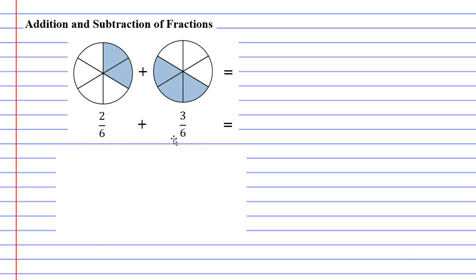We're adding these fractions together and we can see them above in the diagram. The first diagram has a circle cut into six pieces, two of which have been coloured in.